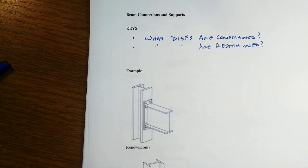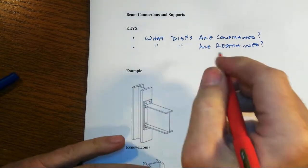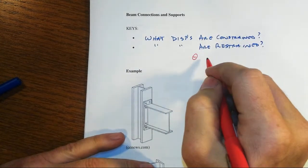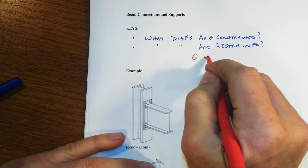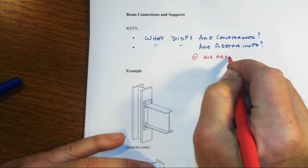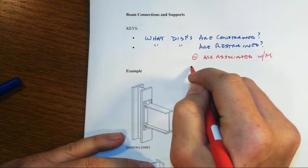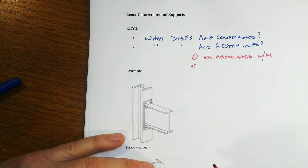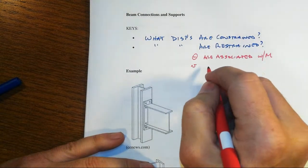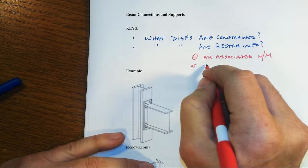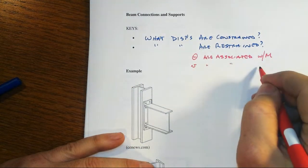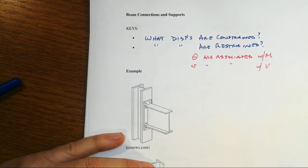That would be the key every single time. So rotations or slopes, theta rotations are associated with bending moment and transverse displacements or translations perpendicular to the longitudinal axis are associated with shear.